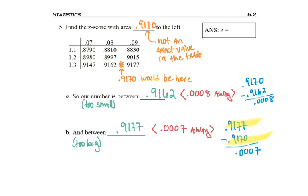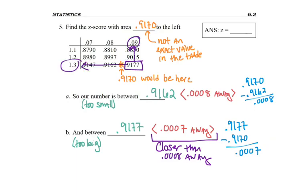So looking at the two values in red, I decided that 0.007 is closer than 0.008. Right, if you're seven feet away from something, you're closer than being eight feet away. So that tells me that the number I wanted to use was the 0.9177, and that's going to give me the z-score I want: 1.39.